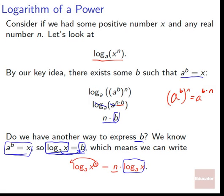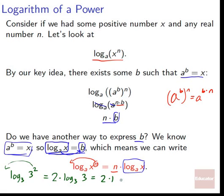Let's look at an example. If we look at log base 3 of 3 squared, by this property we can take the 2, move it out front, and we'd have 2 times log base 3 of 3. Log base 3 of 3 is just 1, so we have 2 times 1, which equals 2. Checking the other way: log base 3 of 9 — what do we have to raise 3 to to get 9? Just 2. Either way we get the same thing — we see this property in action.